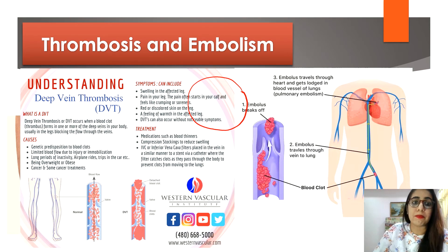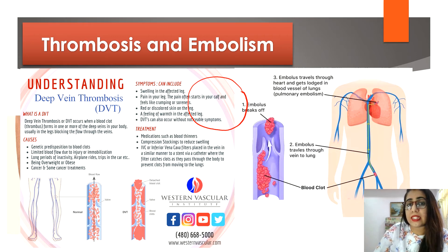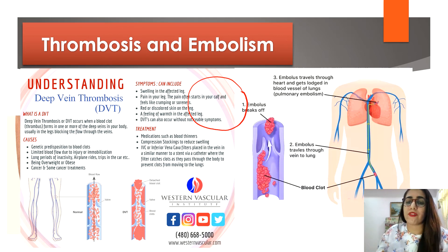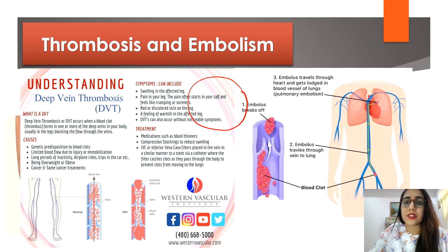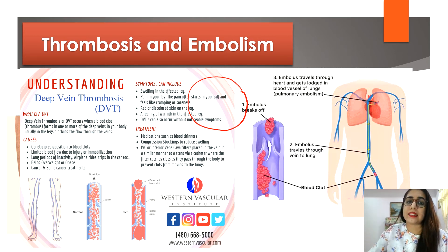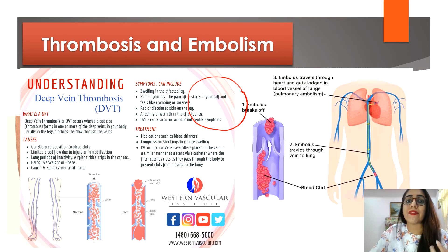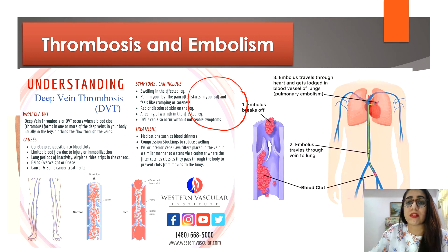To prevent deep vein thrombosis (DVT), exercise regularly and remain active. If you sit for long periods, walk around and do leg stretches from time to time. Stay well hydrated, avoid alcohol consumption, and check your blood pressure regularly — if it's high, take steps to lower it. Finding alternatives for birth control pills and hormone replacement therapy can also reduce the risk of clotting.